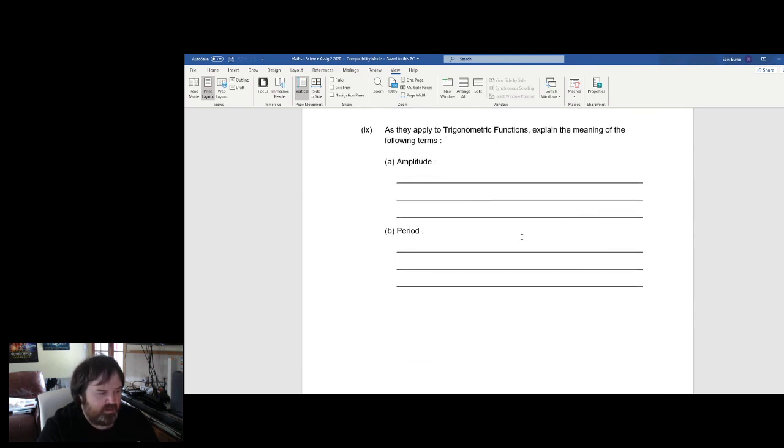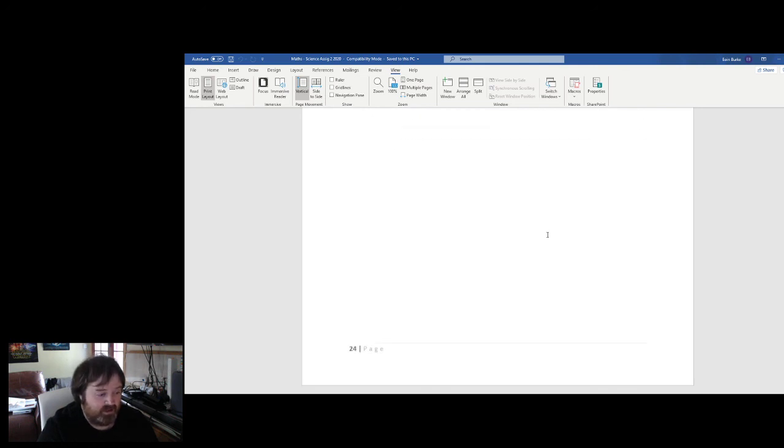Now, as they apply trigonometric functions, they mean the following terms. Amplitude, we know amplitude is how high the curves go and period is how regularly the curves repeat. So, you need to see how that applies to trigonometry and apply those definitions there. Okay. That's the last of those set of questions there for the maths thing.